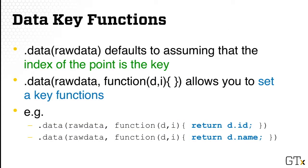In D3, whenever you call .data, what it assumes about your data is that the index of each data point will become the key. That means the index becomes a way that you can pull out a particular data point. But often, the index automatically assigned may not be the best way you want to refer to your data. In that case, you might want to set it yourself.